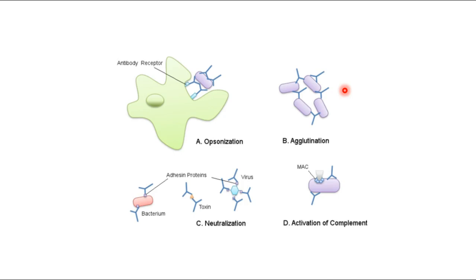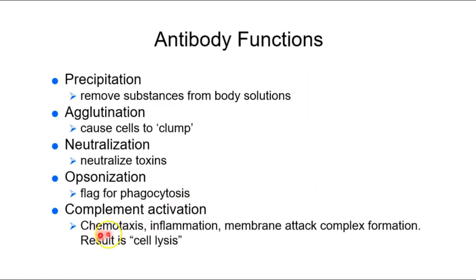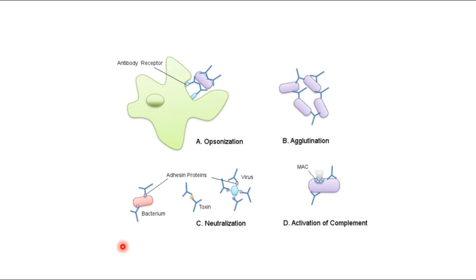Properly precipitating and excreting antigen-antibody complexes is the preferable scenario — but it doesn't always work perfectly, which is why we see these pathologies. Complement activation means chemotaxis, inflammation, and membrane attack complex formation resulting in cell lysis. We get cytotoxic T cells to the area; they insert perforin molecules, and the cell dies if it's successful.